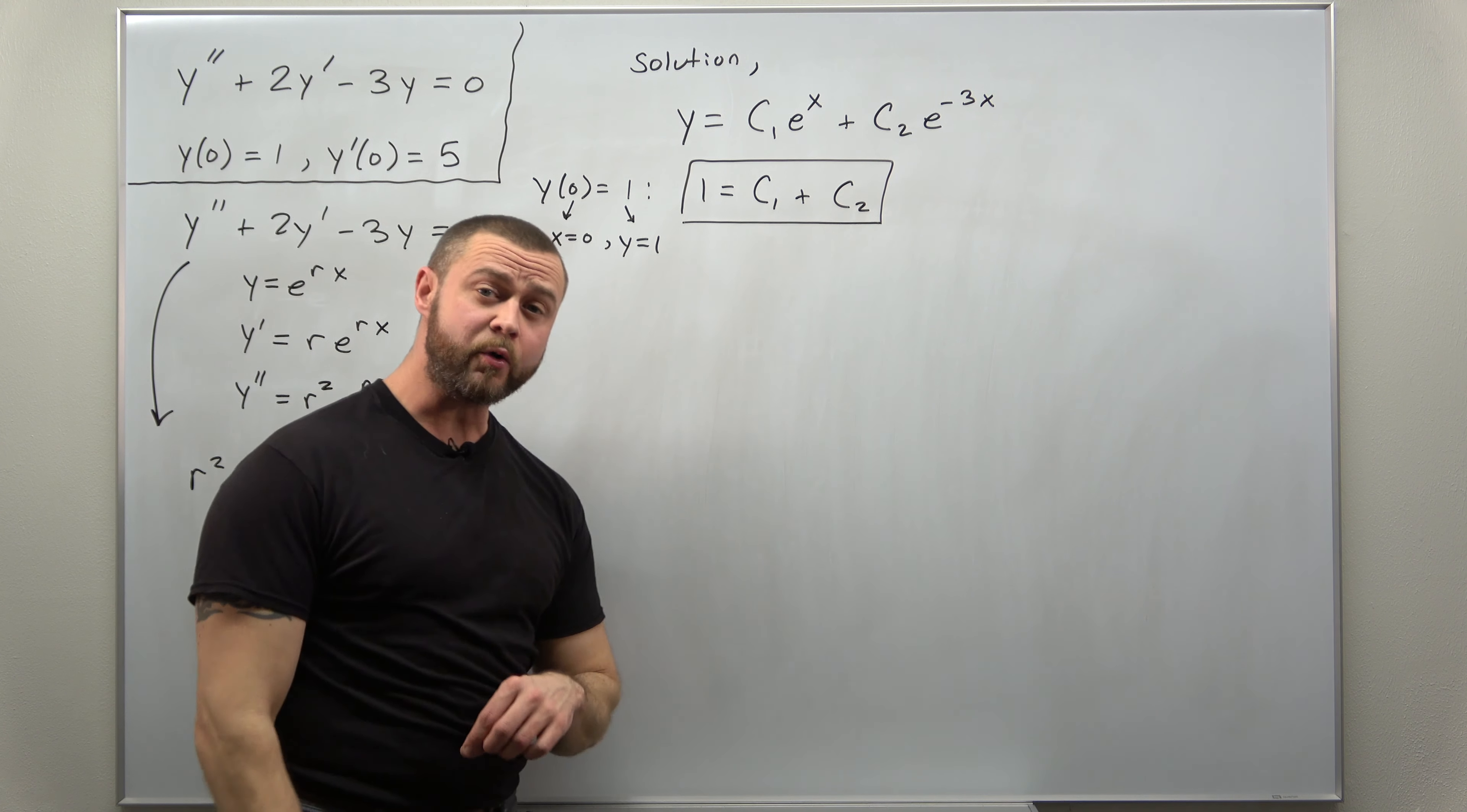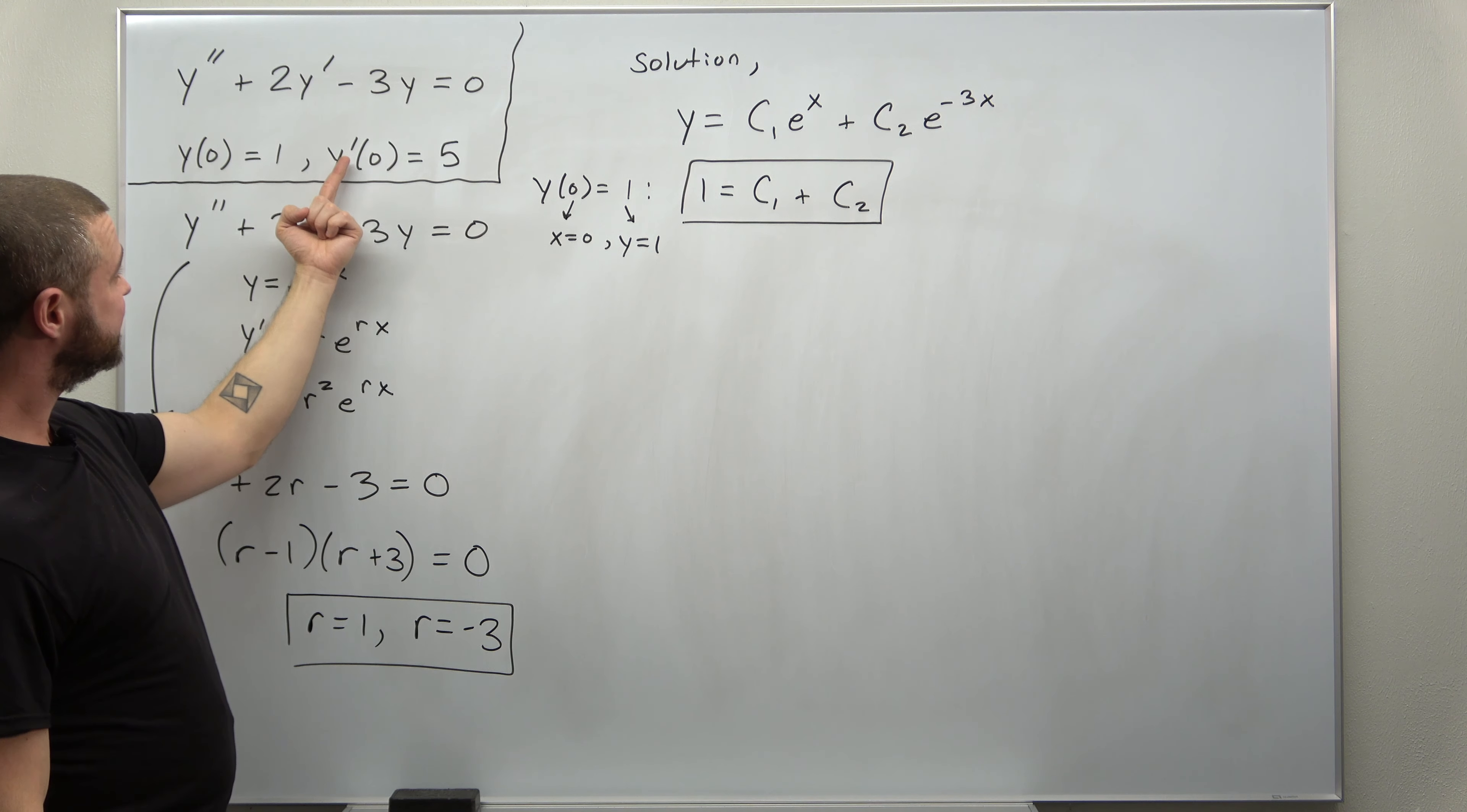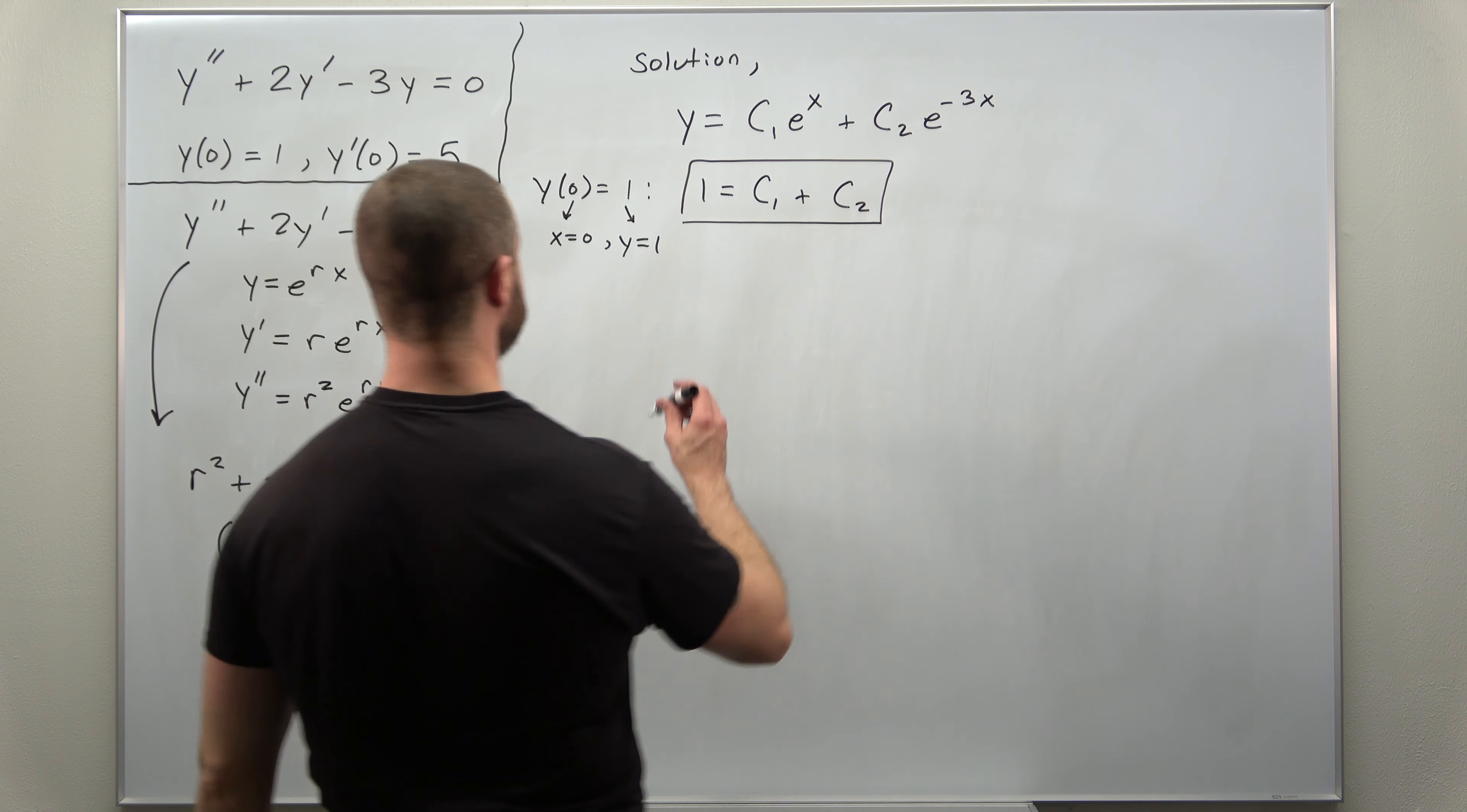Now, that is a single equation involving two unknowns. To solve for two unknowns, we're going to need two equations. That's where we use the derivative initial condition. But to make use of that, notice this is y prime of 0. We're going to have to calculate the derivative of this. That will be very straightforward with the chain rule.